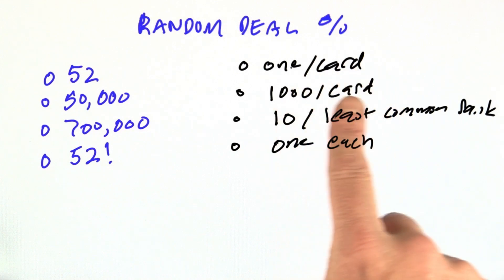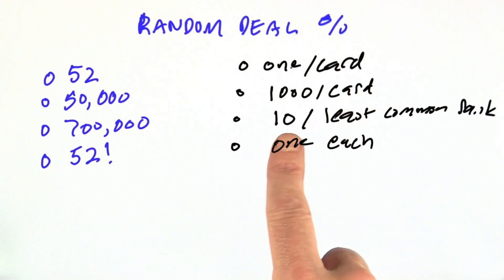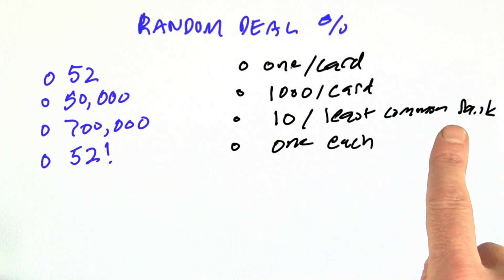1 per card doesn't make sense. 1,000 per card doesn't really help that much. Now we're talking. Here we say at least expect to get 10 possible results for the least common rank. The least common is the straight flush.